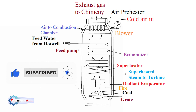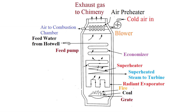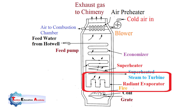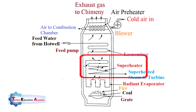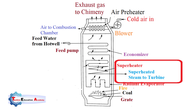The feed water is supplied from the hot well — the outlet of the condenser — through the feed pump to the economizer. In the economizer, the flue gases transfer their heat to increase the temperature of the water before passing to the chimney. This hot water then passes through the coil of the radiant evaporator, where water gets evaporated and is partly converted into steam. The radiant evaporator receives heat from the burning fuel through radiation. After that, it passes through the coil of the superheater, where remaining moisture is removed from the steam and it is supplied to the turbine to generate electricity.